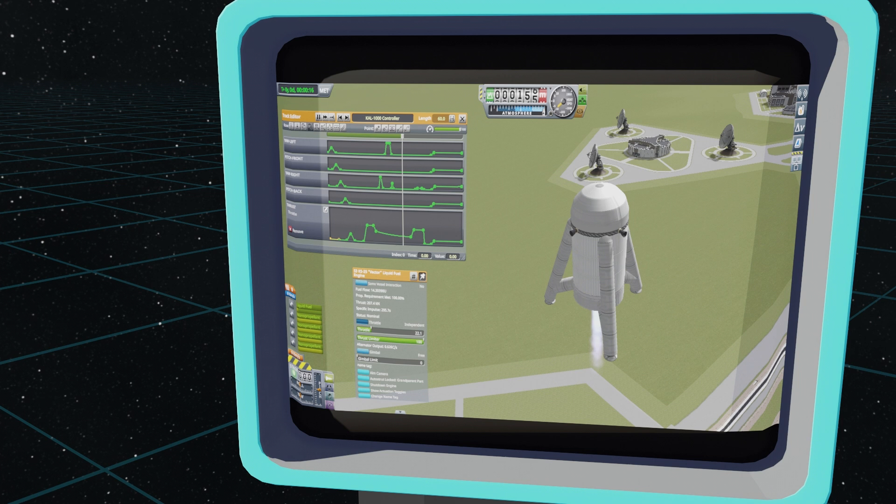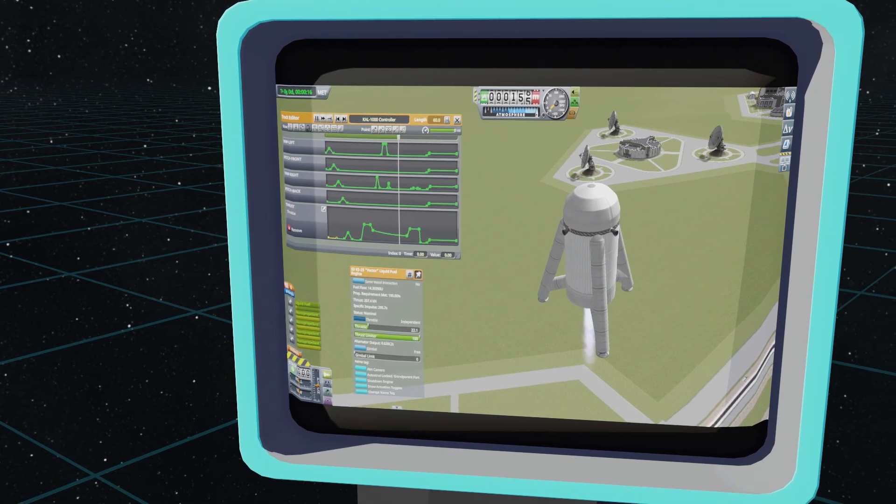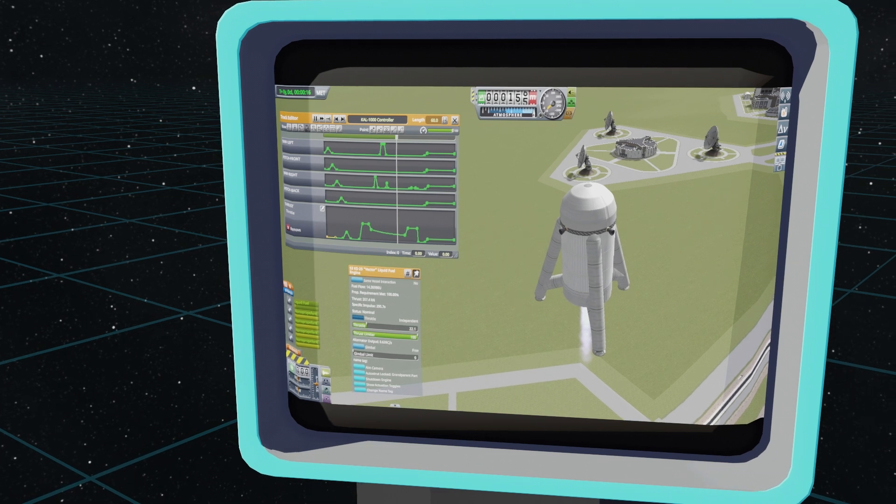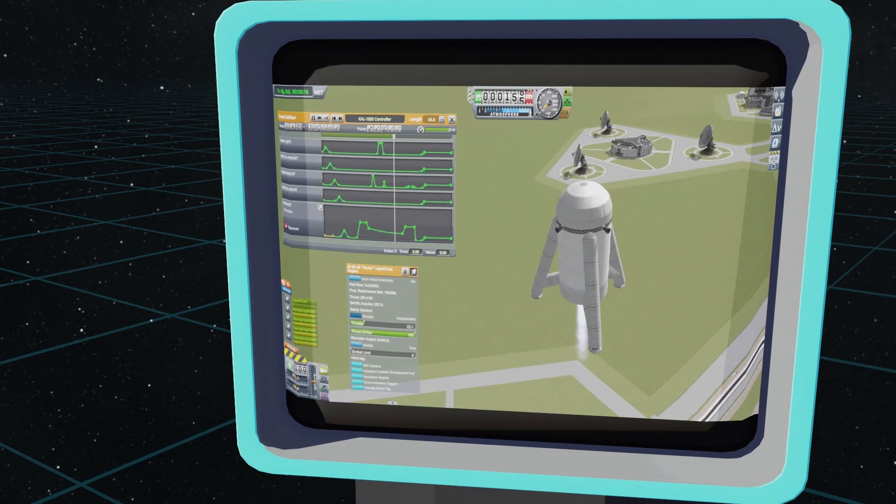This is of course not how real rockets are controlled because it lacks an important part called the feedback. Starhopper as is has no idea of what's happening to it. It just follows a script.